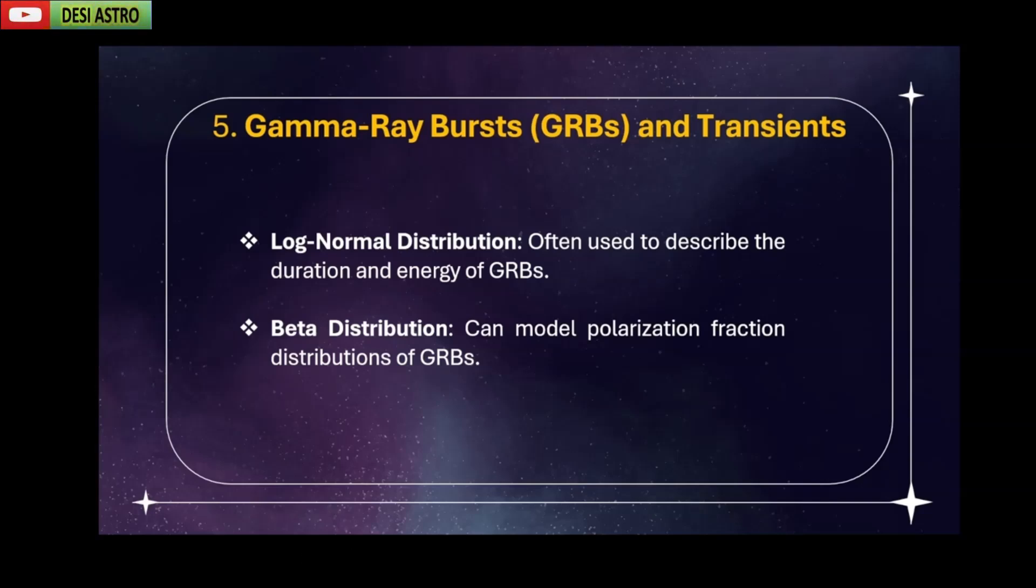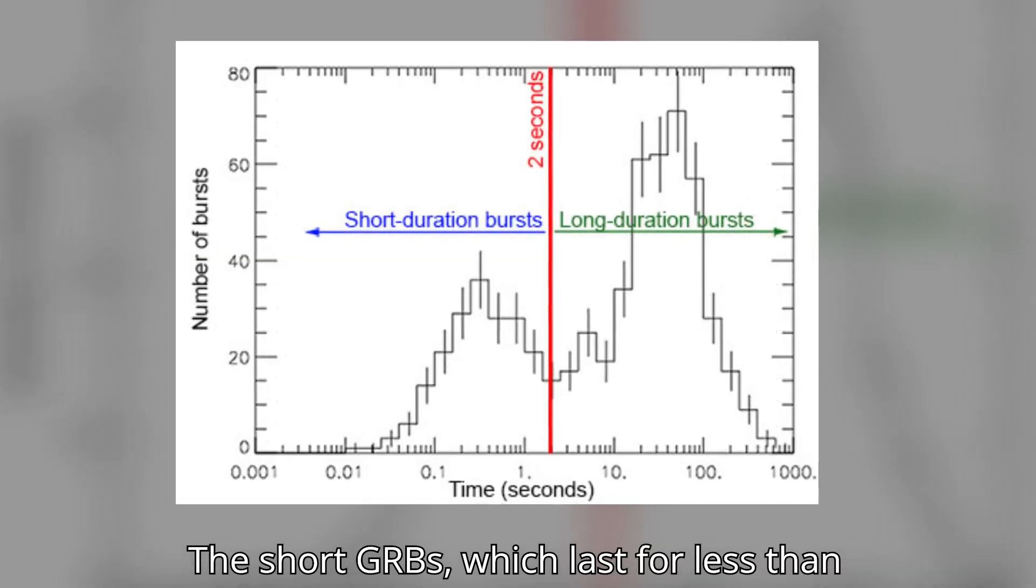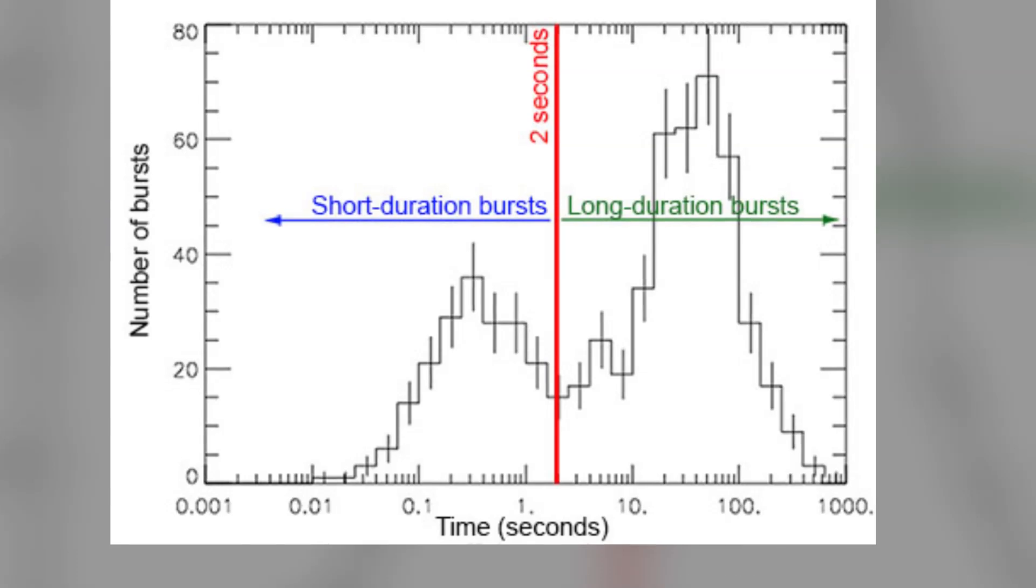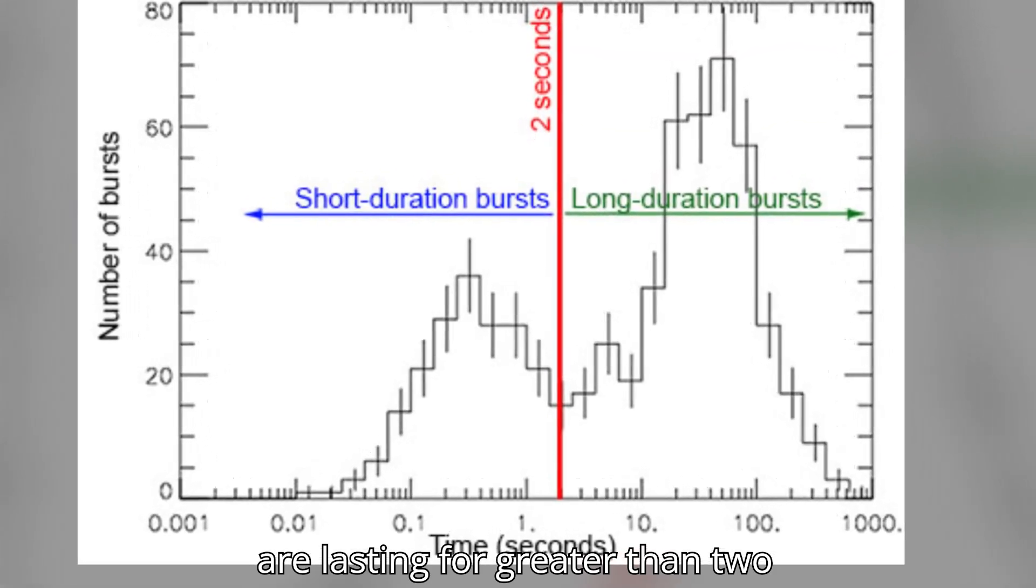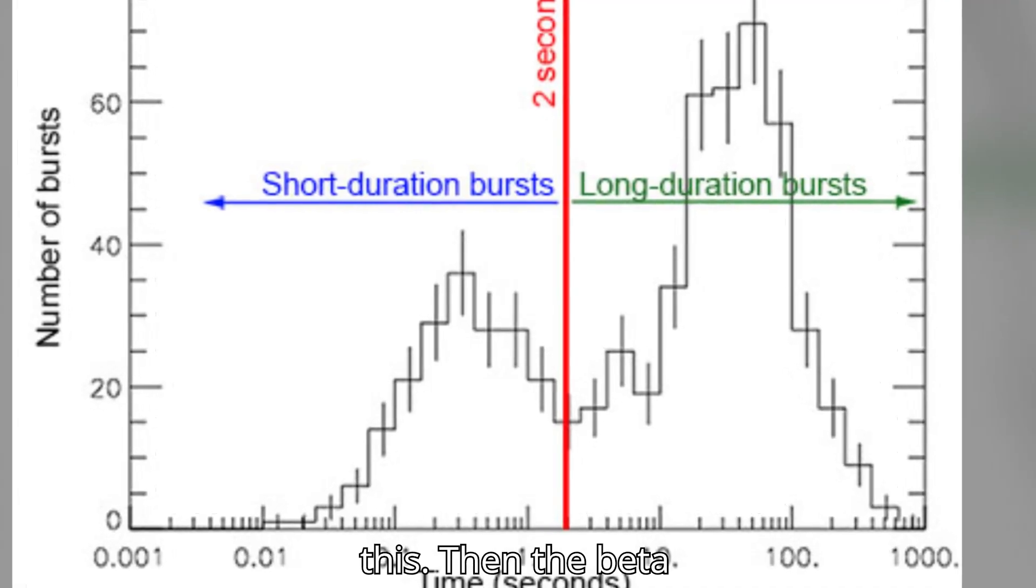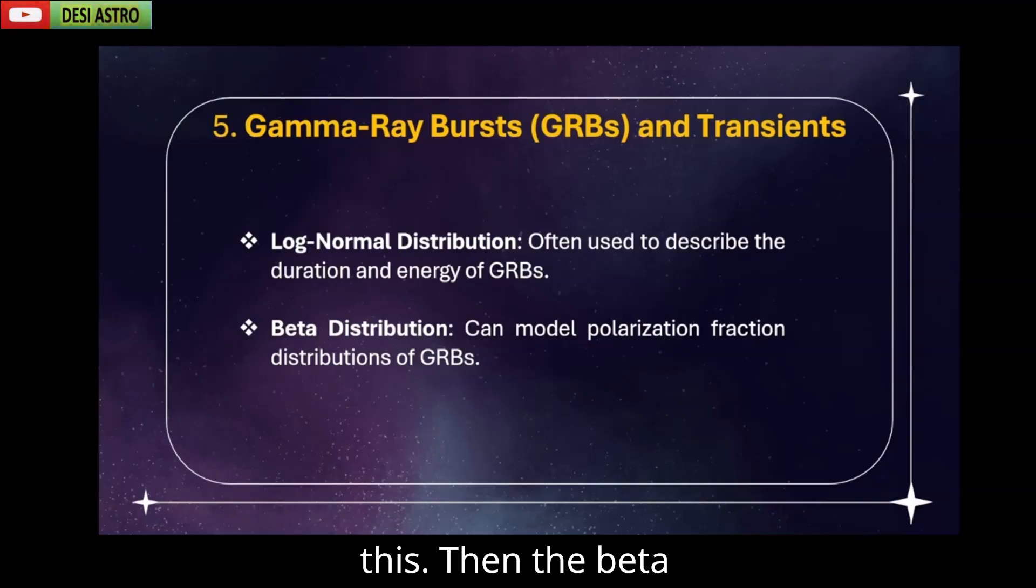For example, the short GRBs which last for less than 2 seconds and long GRBs which last for greater than 2 seconds can be distinguished based on this. Then the beta distribution.